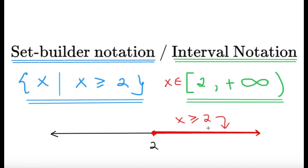If you want to write your solution set — the set of values of x that satisfy the inequality — there are infinitely many: 2, 3, 4, 5, and so on, but also 2.5, 2.25, 2.1, covering all real numbers greater than or equal to 2. You just can't write them all as elements of a set, so we rely on these two ways to describe the set using a mathematical expression.